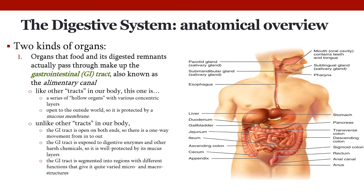To perform these functions, the digestive system has specialized organs divided into two categories. One set of organs are those that food and its digestive remnants actually pass through, making up what's called the gastrointestinal tract, also known as the alimentary canal. The alimentary canal is about 25 feet long from mouth to anus, and it's modified to fit the function needed at each region, giving us different organs along the way.